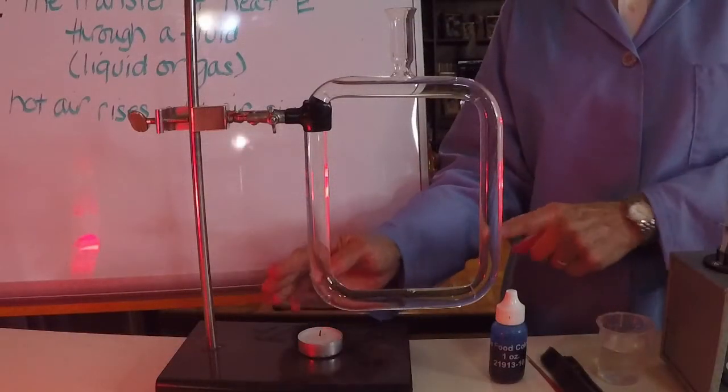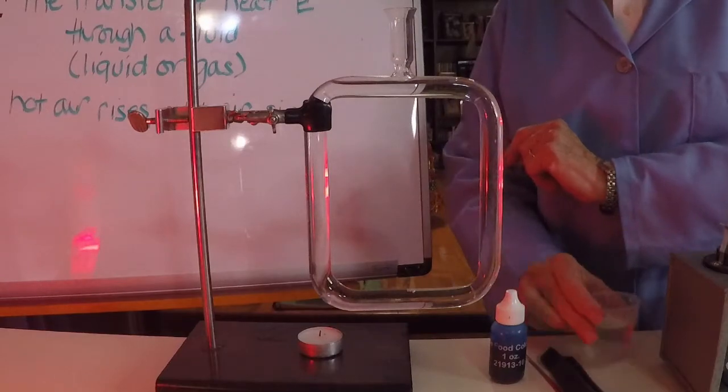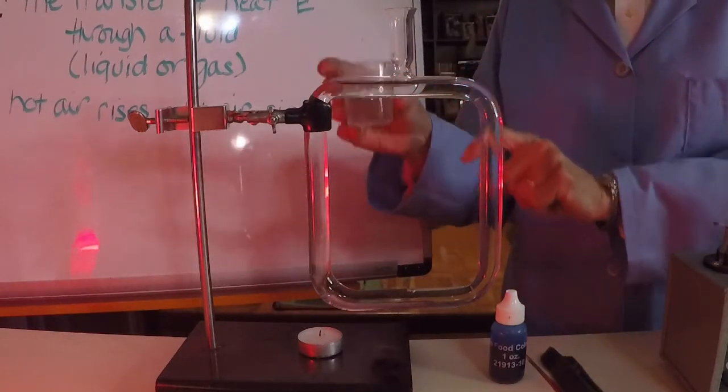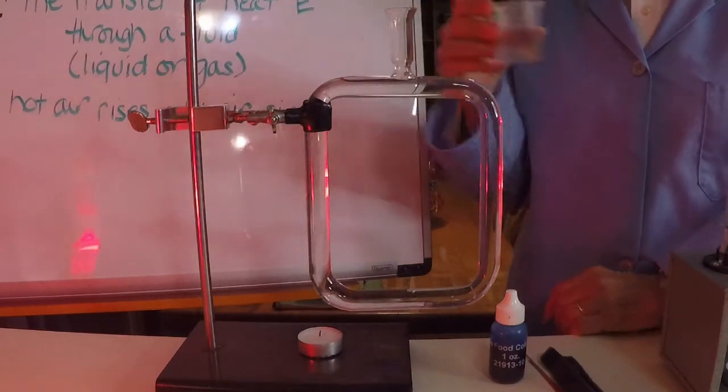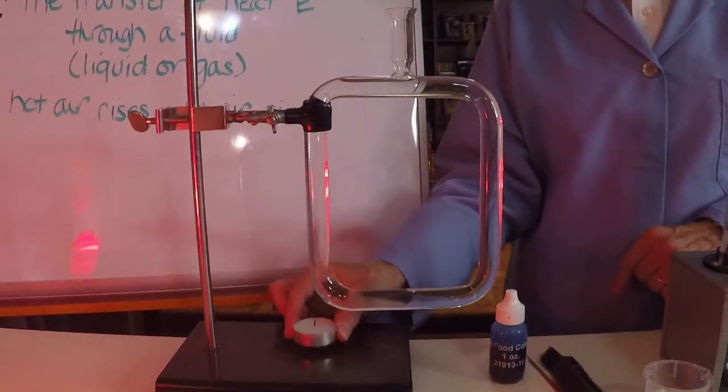The convection tube already has a little bit of water in it, maybe you can see that here, but I'm going to add a little bit more of water because I want it to fill up right up to the little neck. So I'll do that. All right, I'm going to light my candle. I have a candle right here, I'm going to light it.